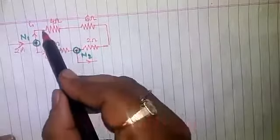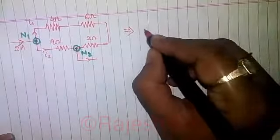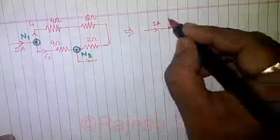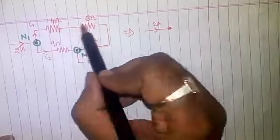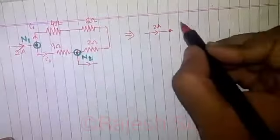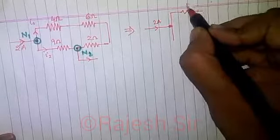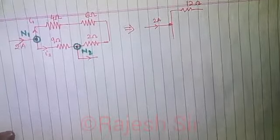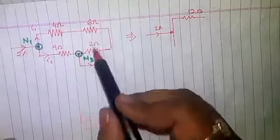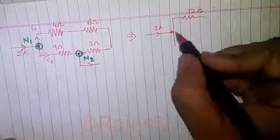And if you are not aware about the terms node, branch or mesh, please refer to my earlier videos given in the description link. Now all these three resistances are in series. So this equivalent one can be redrawn as 2 ampere, and here 6, 4 and 2, since they are all in series, so they happen to be of 12 ohm.